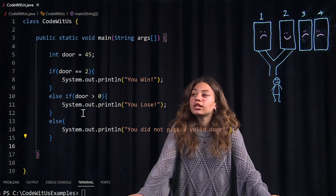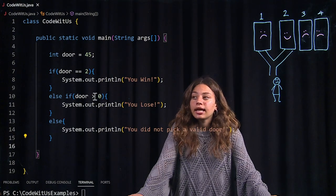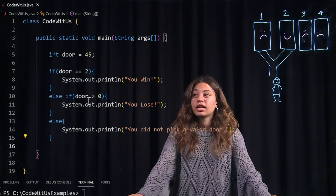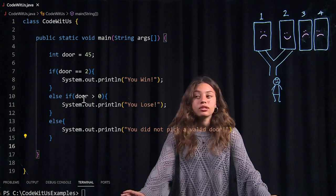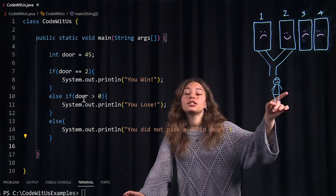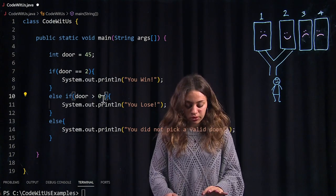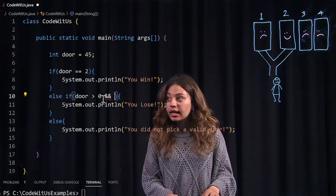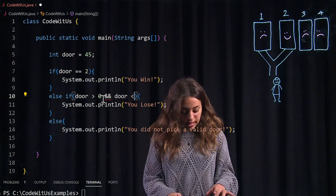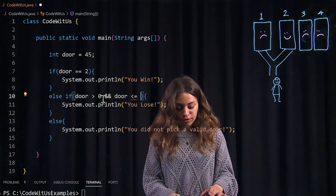I am just going to edit this else if statement so that it checks that my door is greater than zero but it's less than or equal to four because that is the highest door possible to pick. So I'm going to write this and, and my door is less than or equal to four.